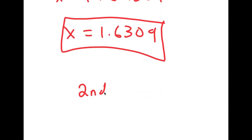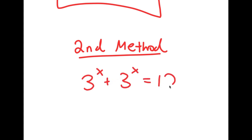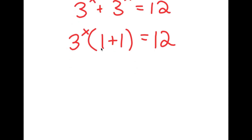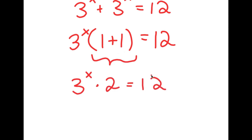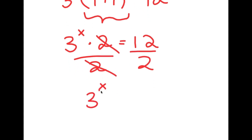I actually have a second method of solving this problem. My equation was 3 to the power of x plus 3 to the power of x is equal to 12. I'm going to start by factoring out 3 to the power of x from my left-hand side, so I get 3 to the power of x times 1 plus 1 is equal to 12. Since 1 plus 1 is 2, I get 3 to the power of x times 2 is equal to 12. Dividing both sides by 2, I get 3 to the power of x is equal to 6.